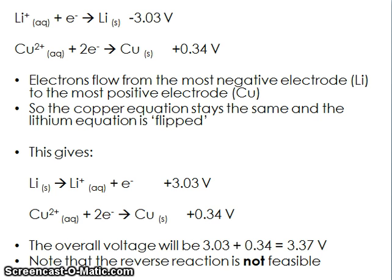It's important to remember that the number of electrons doesn't affect the voltage. Students sometimes multiply the lithium voltage by two to match the number of electrons — that doesn't happen. To work out the overall voltage, you simply add the two values together. When you reverse the lithium equation, you must change the sign on the voltage, flipping it from minus to plus. That gives an overall voltage of 3.37 volts. So that reaction will happen — lithium will react with Cu²⁺ to give Li⁺ and copper. The reverse reaction is not feasible.